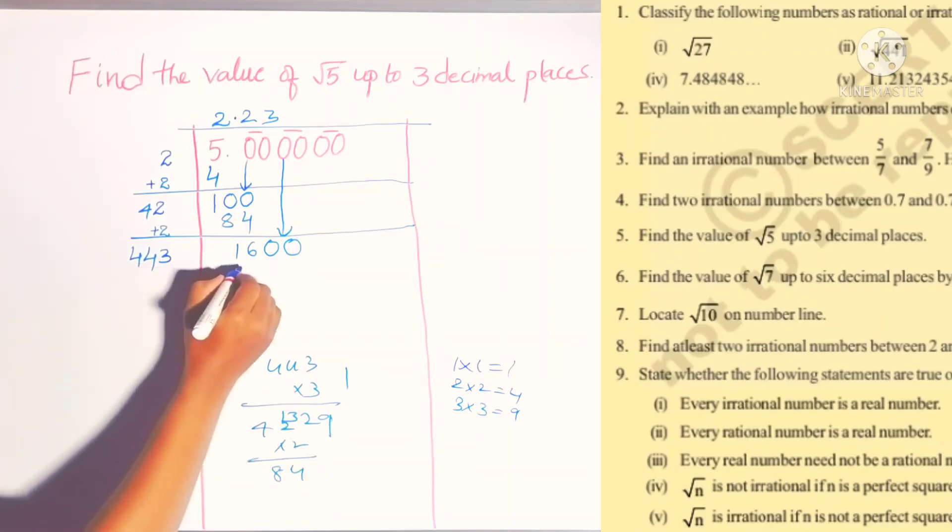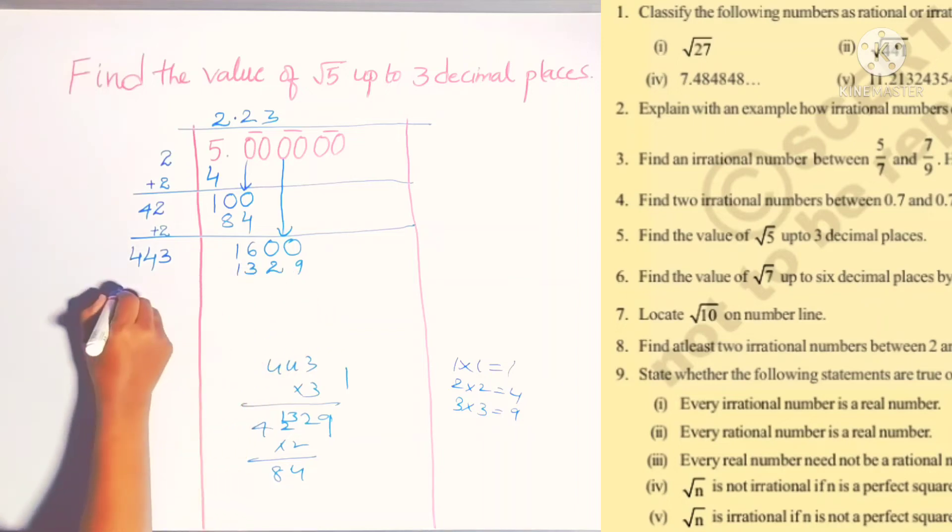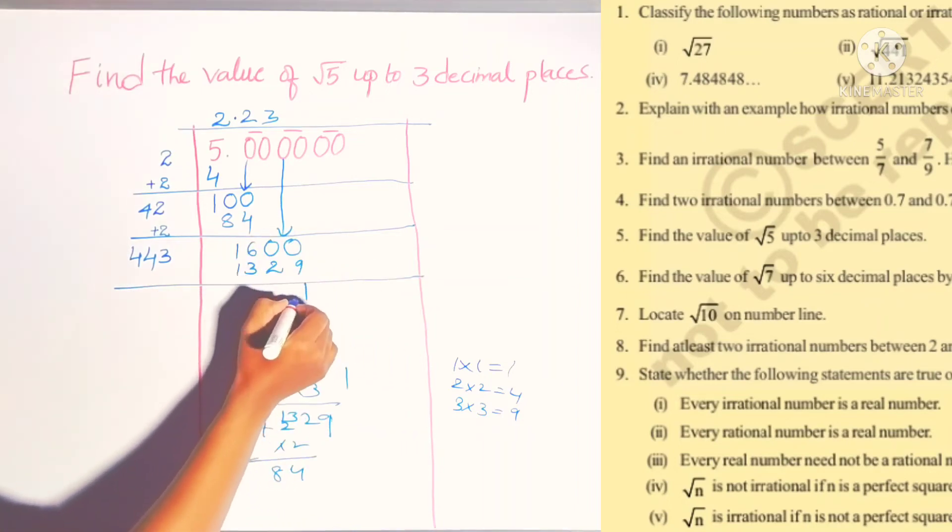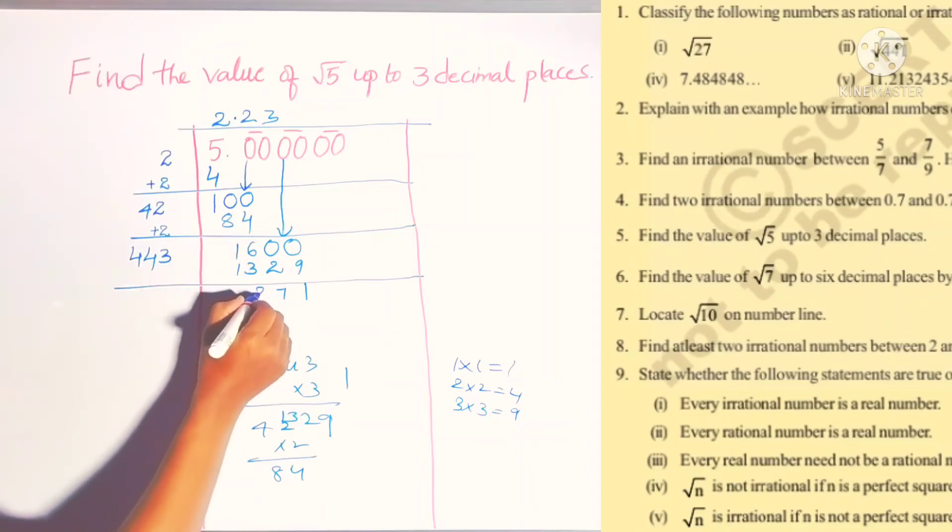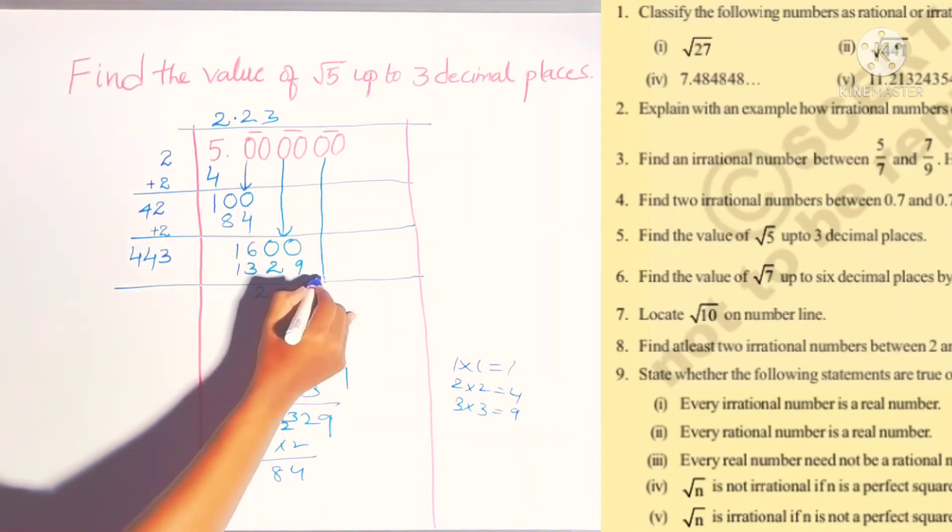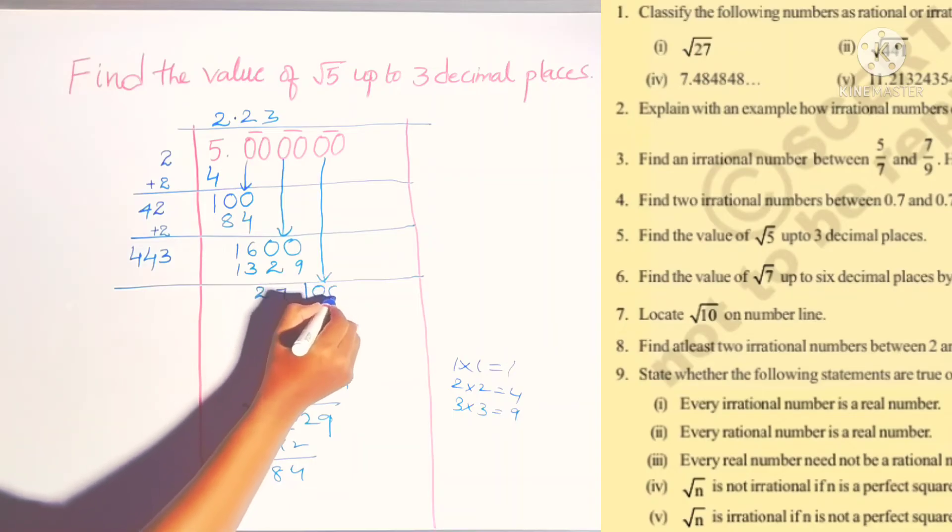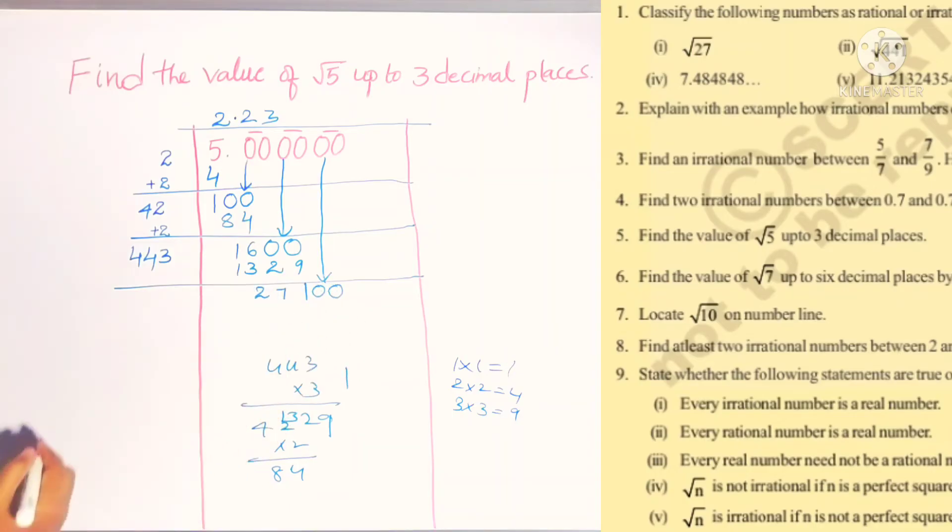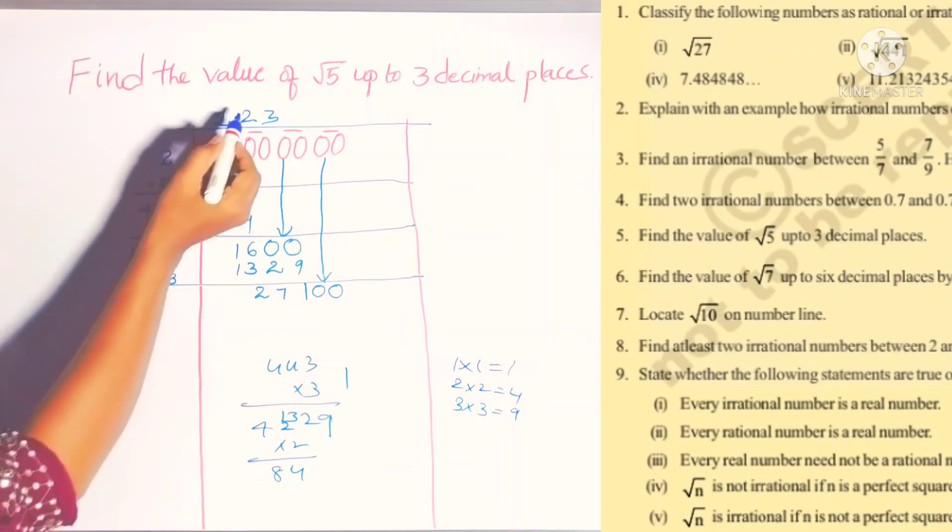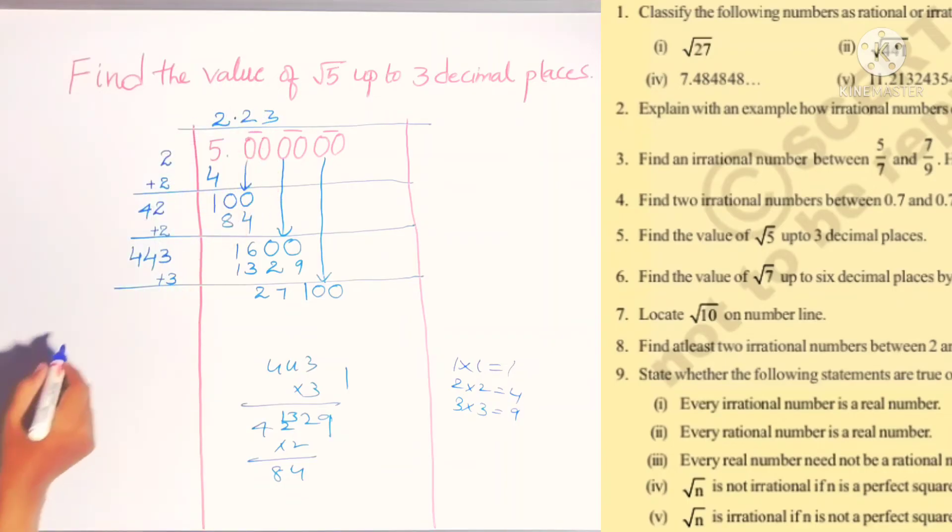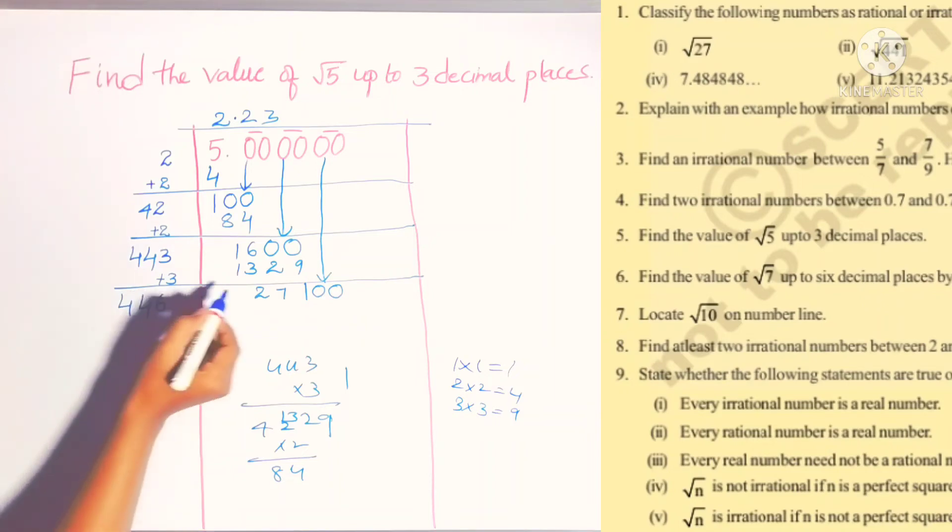So write 3 here. After subtracting, 1600 minus 1329: 10 minus 9 is 1, 9 minus 2 is 7, 5 minus 3 is 2, giving us 271. Just write another set of zeros down. Here 3 is in units place, so just add that 3 again. We wrote 3 only in the quotient, so add that. This value is 446.